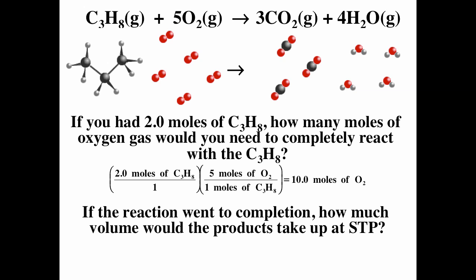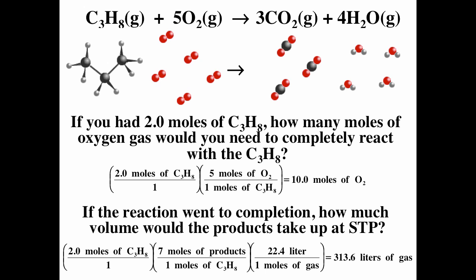If the reaction goes to completion, how much volume would the products take up at STP? STP stands for standard temperature and pressure — one atmosphere of pressure and a temperature of zero degrees Celsius, which corresponds to 273 Kelvin. Remember that one mole of an ideal gas takes up 22.4 liters of volume at STP. We had two moles of propane, and the products are three moles of CO2 plus four moles of water, giving seven moles of products per one mole of propane. So two times seven is 14 times 22.4 gives us 313.6 liters of gas. Ideal gas law enables us to actually determine how much gas would be produced.